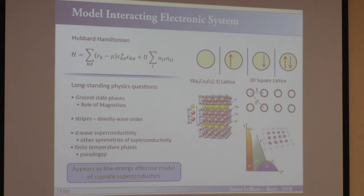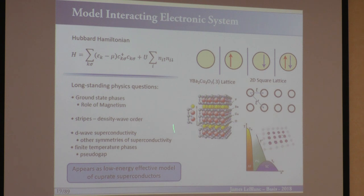Cuprates have a complicated phase diagram as a function of doping. When they're the stoichiometric compound, they're typically anti-ferromagnetic insulators. As you dope the system — here this is a diagram for hole doping — you eventually get a superconducting phase. By doping, I mean you put some chemical oxygen or strontium that removes electrons from these copper oxide planes, effectively changing the chemical potential of the system.